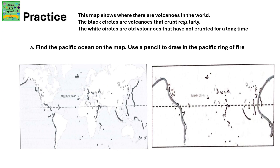Here's a picture of the map that shows where the volcanoes in the world are. The black circles are volcanoes that erupt regularly. The white circles are those old volcanoes that have not erupted for a very long time.